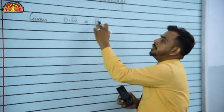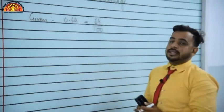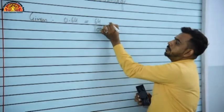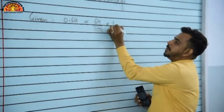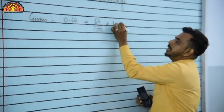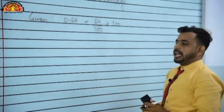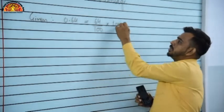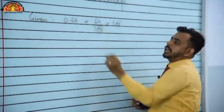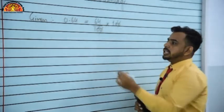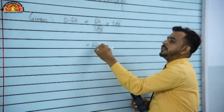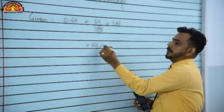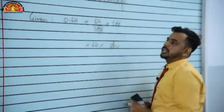So firstly, convert the decimal into fraction form. Then multiply the result by 100. Cancel the common terms — 100 cancels 100 — so result is 64. Put the percentage sign — this is the answer.